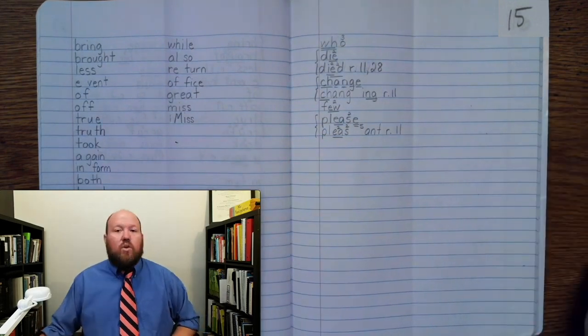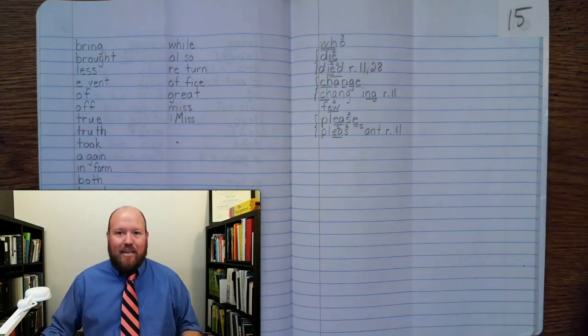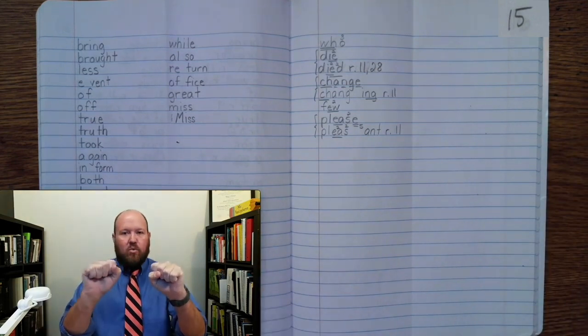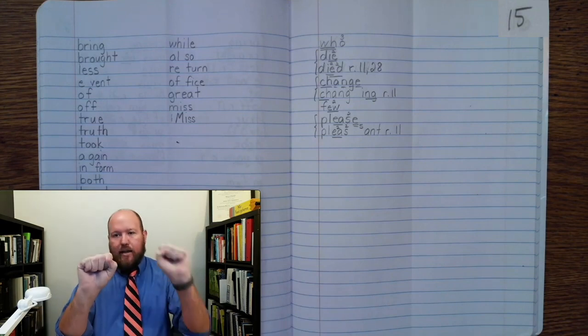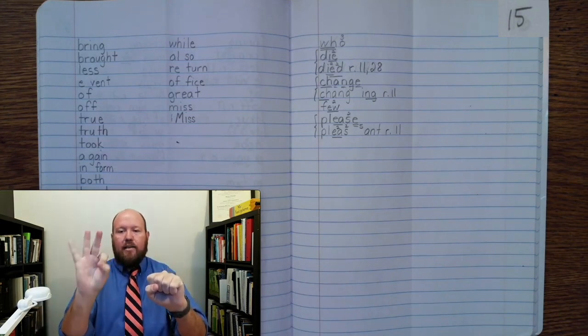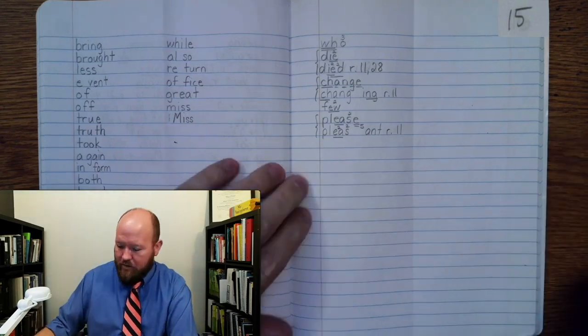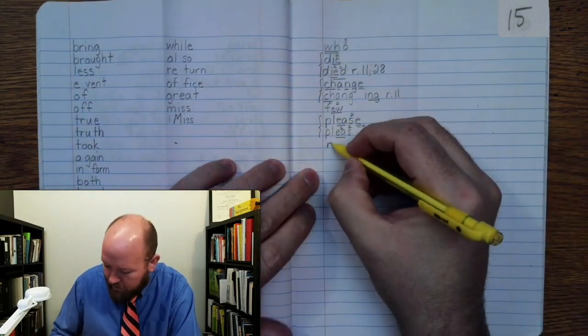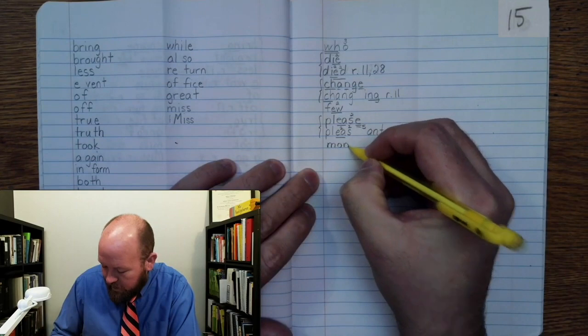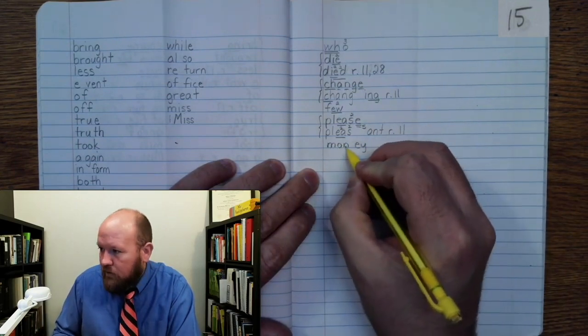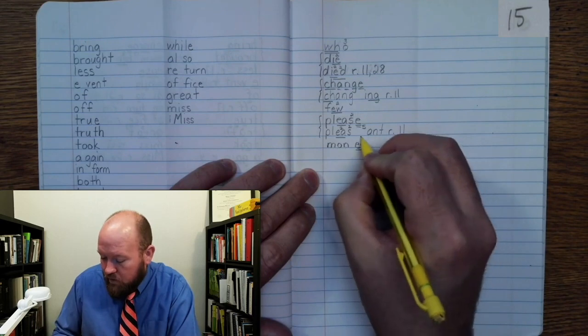The next word is the word MONEY. It's like I need to be able to spend some money. Money. Base word money. M-U-N-E. M-O-N. Here we're going to use the EY phonogram. Money. M-O-N-E. M-A-N-E once, three.